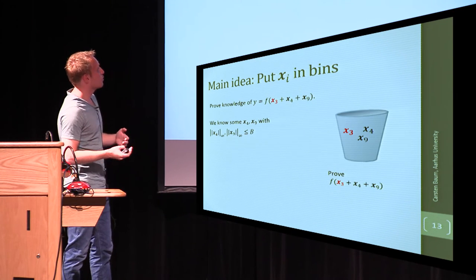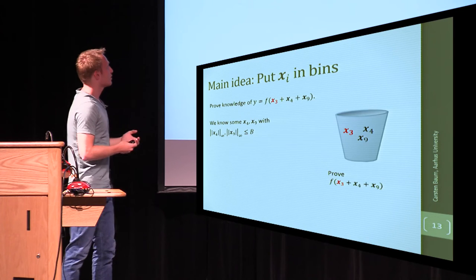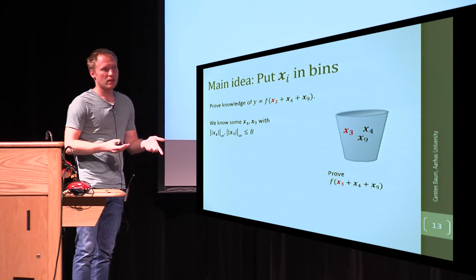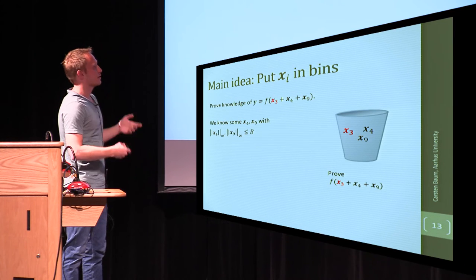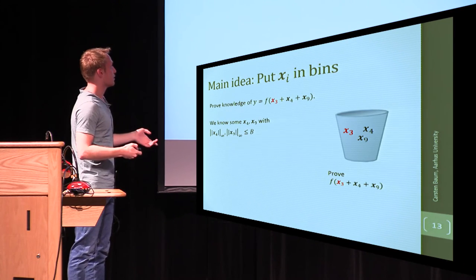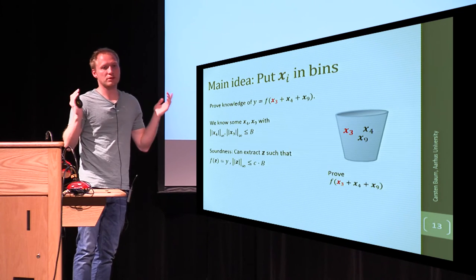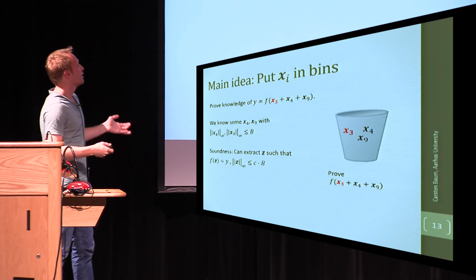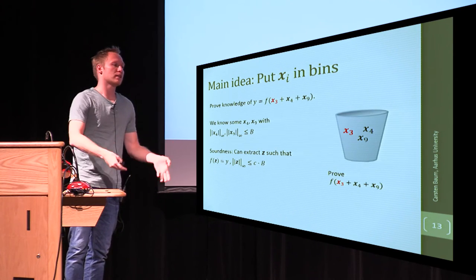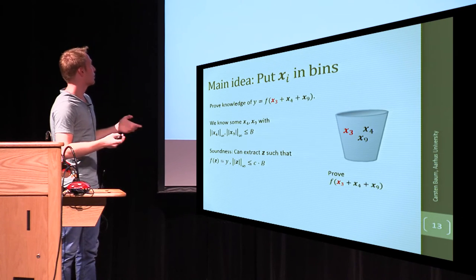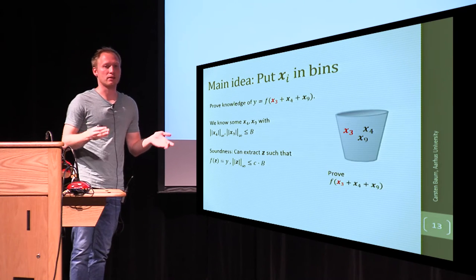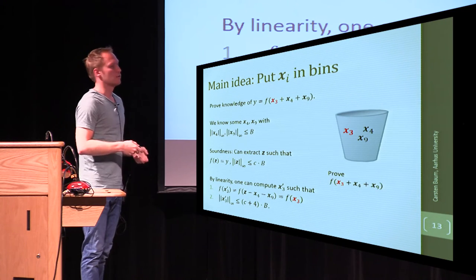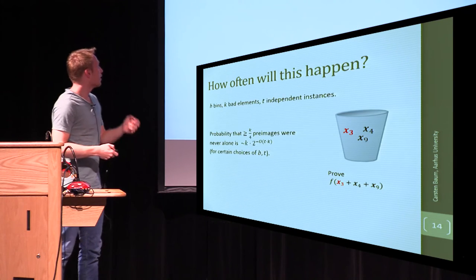So, assume we already have an x4 and we have an x9 to explain certain values, and now we're left to, in the soundness proof, we're left with extracting an x3. And the prover was actually able to convince us that the sum of these values is short. Then, since we already know that the other two values in the equation are short, we can just subtract them from... since the proof that the sum is short is also sound, we can just extract the pre-image there, subtract the x4, x9, and there we go. We have a pre-image that goes to the same value as x3, and it's also short. So, that's the most fundamental insight.